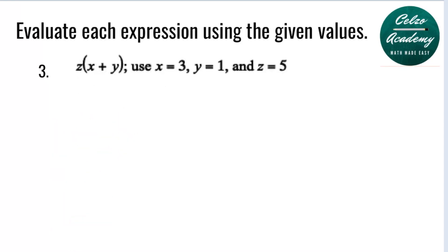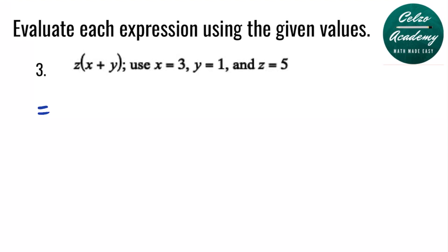Question number 3. Evaluate z times the quantity x plus y, using x equals 3, y equals 1, and z equals 5. The first step is to substitute the values for each variable. Our z value is 5, multiplied by x value 3, plus our y value 1.